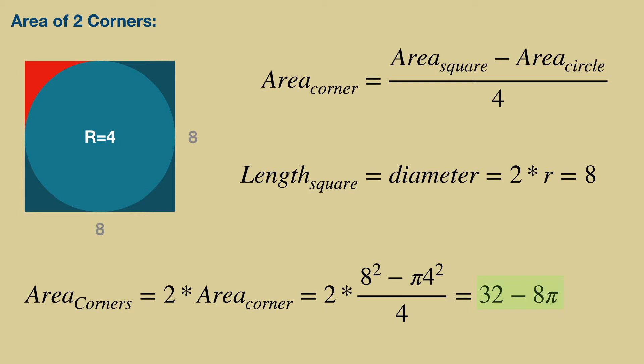So the area of both red corners is therefore 2 times area of one red corner, which after substituting 4 for the radius and 8 for the length, becomes 32 minus 8 pi.